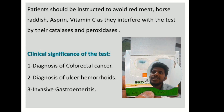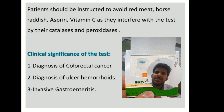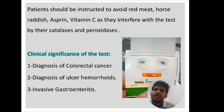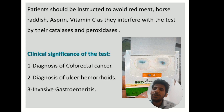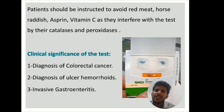The patient should be instructed to avoid red meat, horseradish, aspirin, and vitamin C, as they interfere with the test through catalysis and peroxidases and can give false results. The clinical significance of the occult blood test is diagnosis of colorectal cancer, ulcer, hemorrhoids, and invasive gastroenteritis.